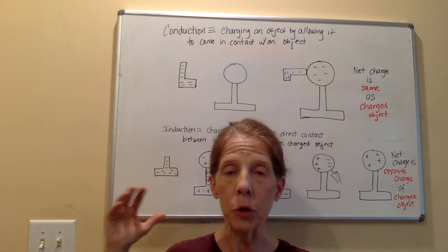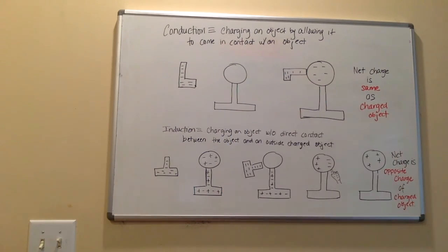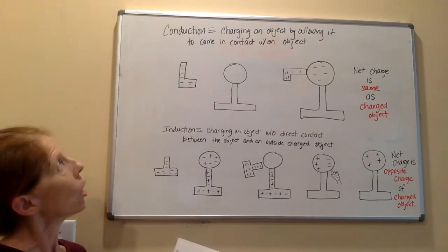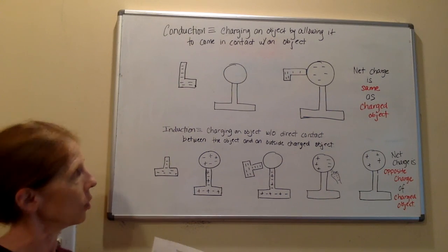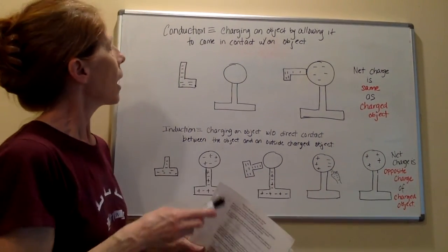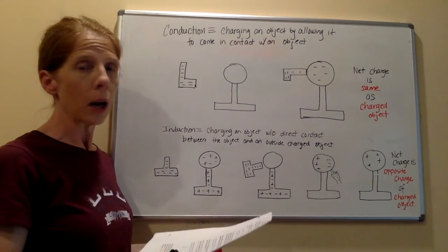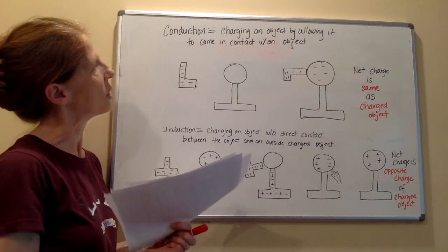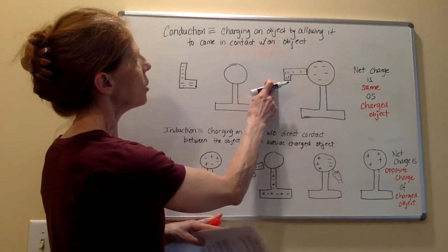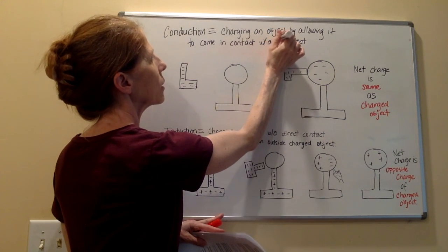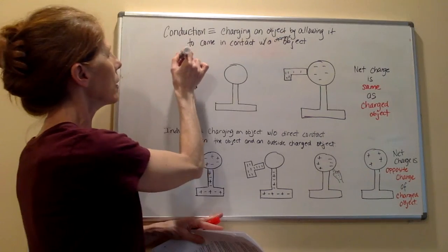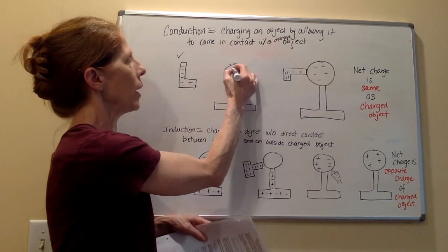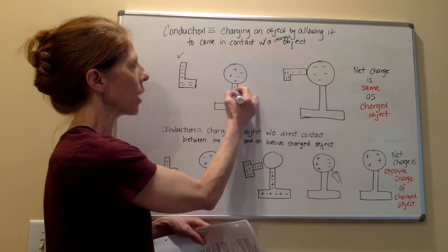Now I'm going to talk about a couple different ways that we can charge objects. I'm going to show you on the board what I've drawn here. The two biggest ways of charging things are charging through conduction and charging through induction. Conduction is the process of charging an object by allowing it to come into contact with a charged object. This is my charged object right here, and you can tell it has an overall negative charge. Here's another substance. It's got equal numbers of positive and negative charges, so it's neutral.